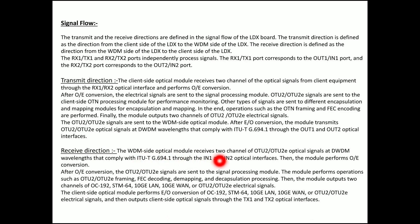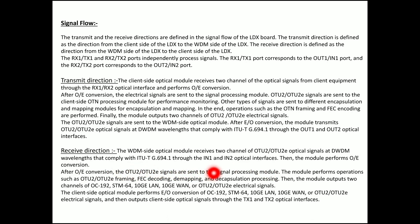In the receive direction, which is the opposite of the transmit direction, the WDM side optical module receives two channels of optical signals at DWDM wavelengths compliant with ITU-T through the IN1 and IN2 optical interfaces. After optical-to-electrical conversion, the OTN signals are sent to the signal processing module, which performs framing, FEC decoding, demapping, and decapsulation. The module then outputs two channels of client signals such as OC-192, STM-64, 10G LAN, 10G WAN, or OTU2 electrical signals. The client side optical module performs electrical-to-optical conversion and outputs to the client via TX1 or TX2.